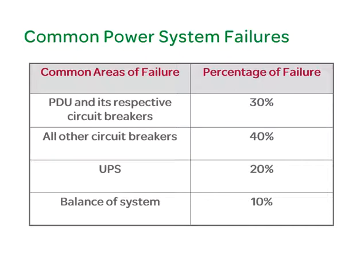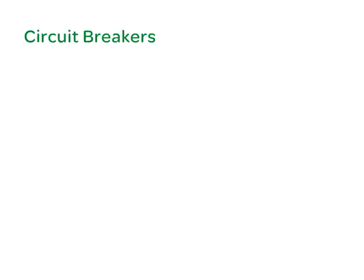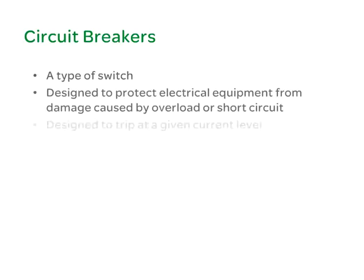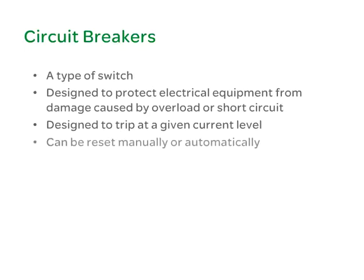We will now discuss the topic of circuit breakers and their importance in the data center. A circuit breaker is a piece of equipment, or a type of switch, that is designed to protect electrical equipment from damage caused by overload or short circuit. Circuit breakers are designed to trip at a given current level. Unlike fuses and switches, circuit breakers can be reset. Large circuit breakers have adjustable trip mechanisms, while smaller circuit breakers, designed for branch circuits, have their trip levels internally preset according to their electrical current rating.